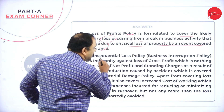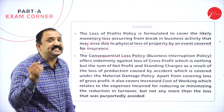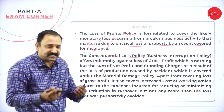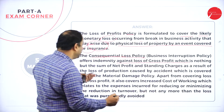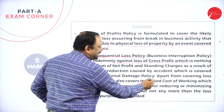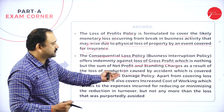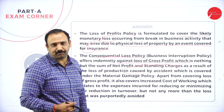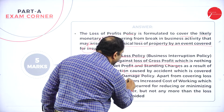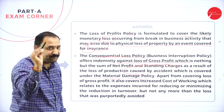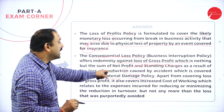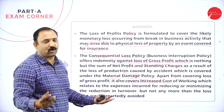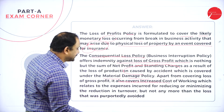Next comes the consequential loss policy, which means the business interruption policy, which offers indemnity — a safeguard against the loss of gross profit, which is the sum of net profit and standing charges — as a result of the loss of production caused by the accident which is under the material damage policy. Please note the key points: material damage policy. Those keywords must be mentioned in your paper.